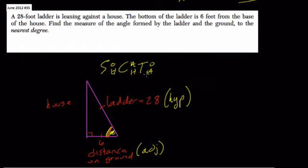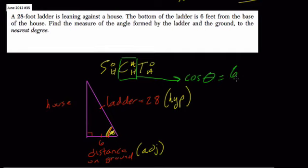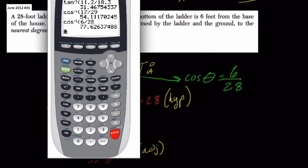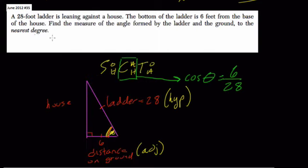Using SOH-CAH-TOA, we have adjacent and hypotenuse, so we use cosine. The cosine of theta equals the adjacent over the hypotenuse, or 6 over 28. To find the angle, we hit second cosine — the inverse cosine — of 6 over 28. We get 77.6 degrees, which rounds to 78 degrees. That's our angle.